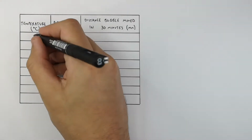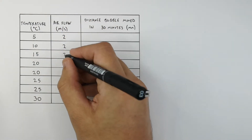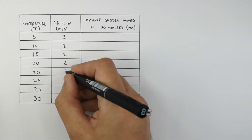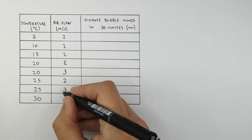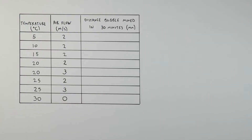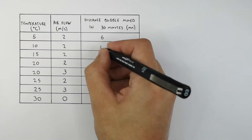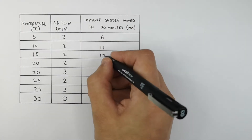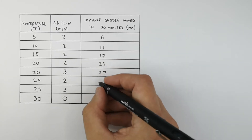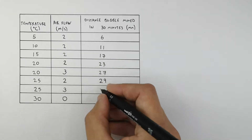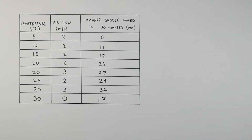We use the following temperatures and wind speeds — the airflow directed towards the plant — and these are the recorded distances that the bubble moved in 30 minutes for each temperature and airflow variable change.